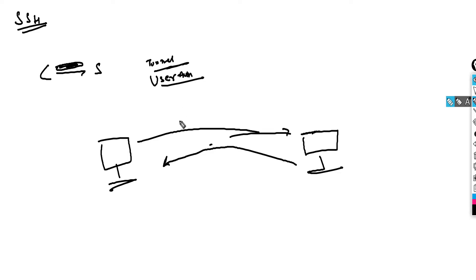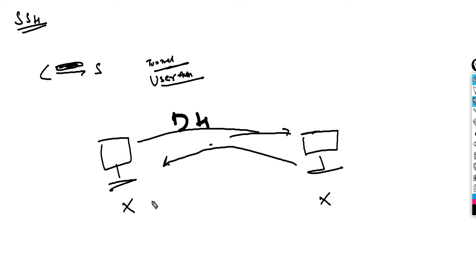For tunnel encryption, SSH uses something called Diffie-Hellman. What client and server do is they agree on a big prime number — let's call it x. There is also an encryption generator, which defines the kind of encryption to be used — let's call that y. Then there is a private key, which is basically another prime number — let's call it z. The private key on the client side is different, so let's call them z and z1 respectively.